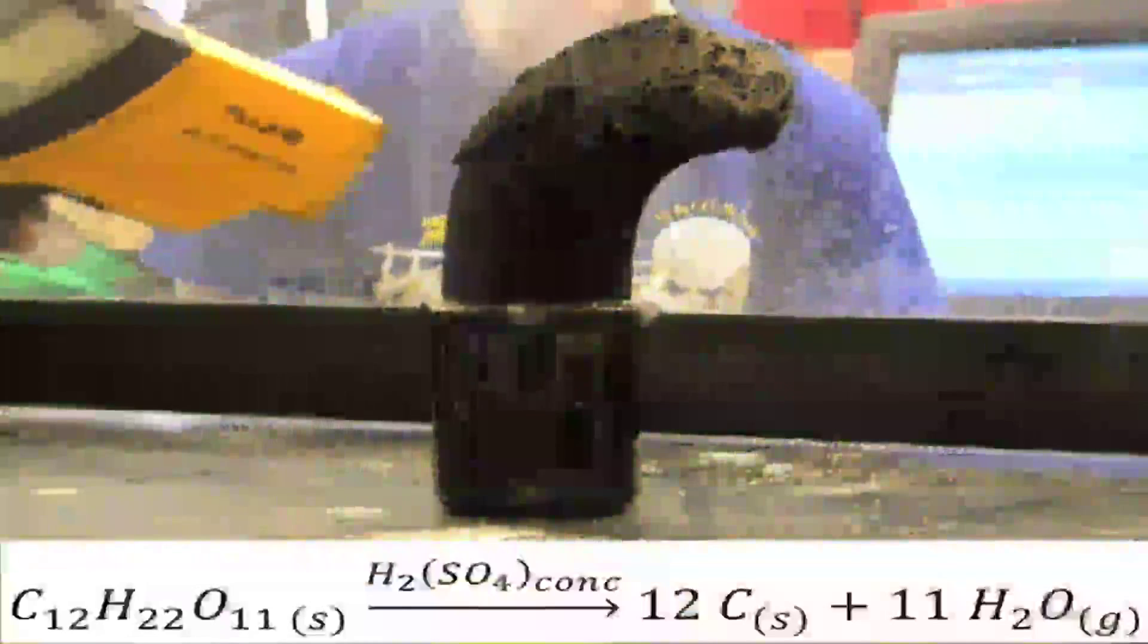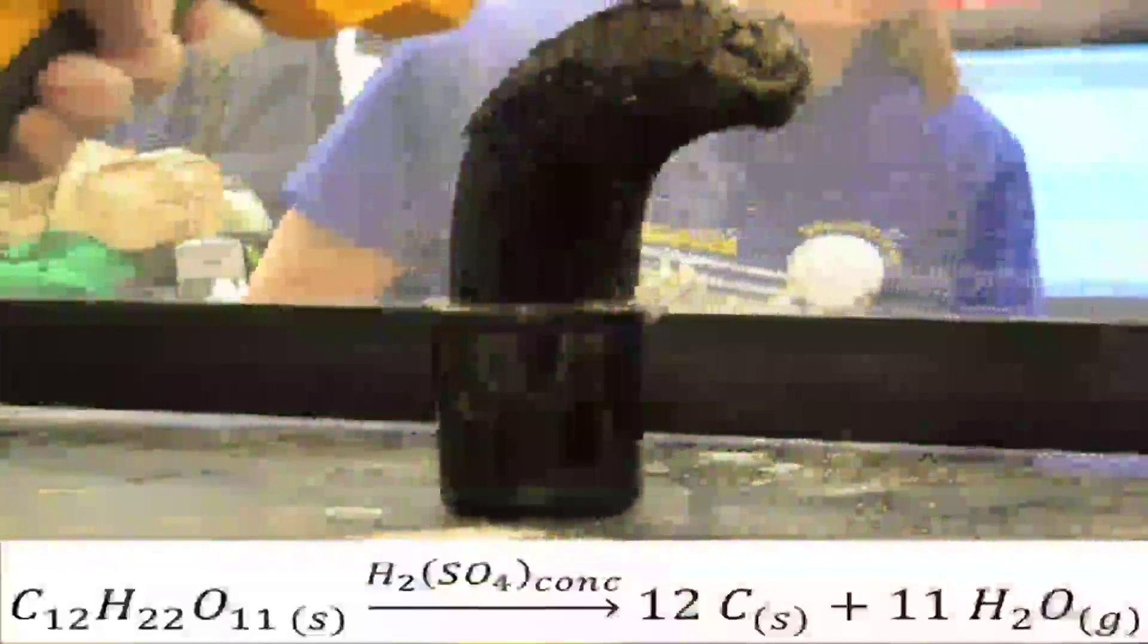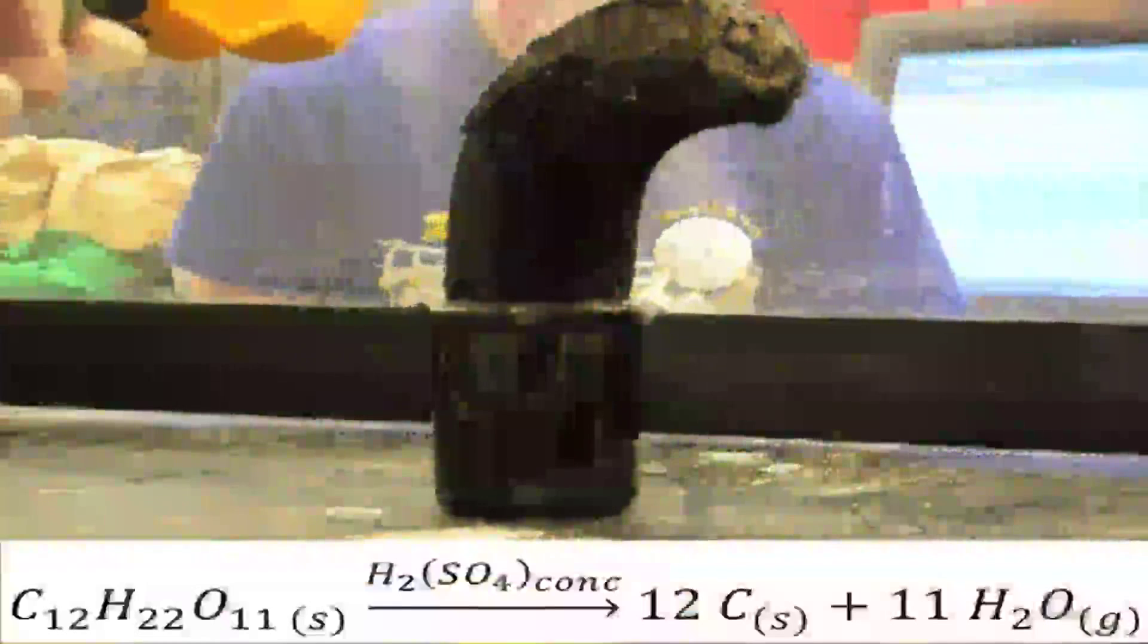The reaction is obviously very exothermic, and I'm measuring it here again with the IRT, and we get a maximum temperature of 163 degrees Celsius during the reaction, which is well over the 100 degrees Celsius boiling point of water, hence the steam. As I turn the thermometer towards the screen, you can see numbers between 130 and even 150 up there. It's obviously very hot and very exothermic.